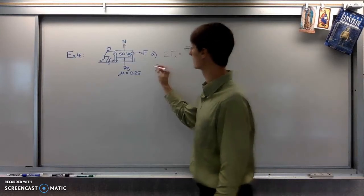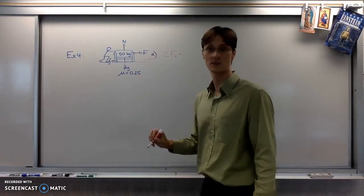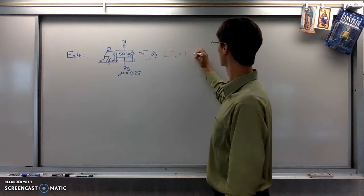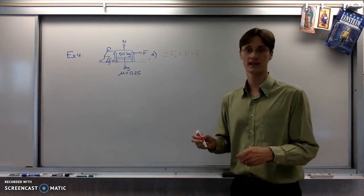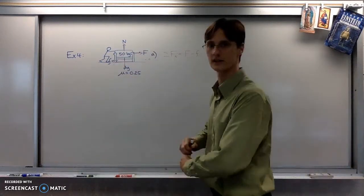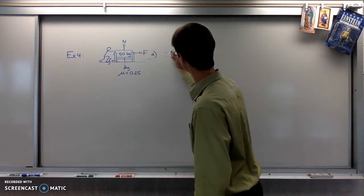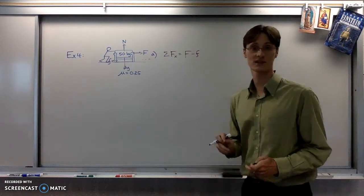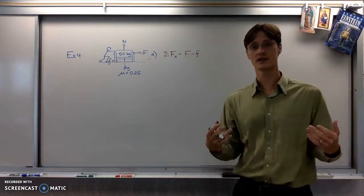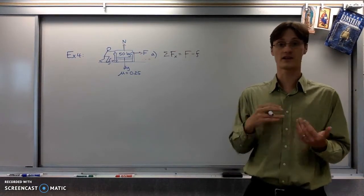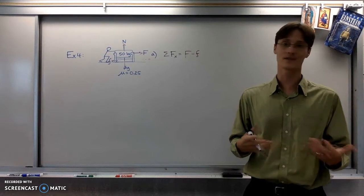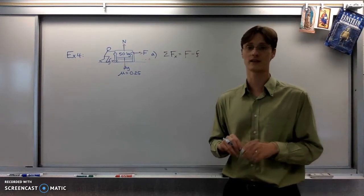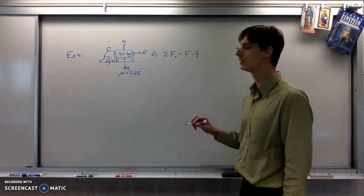So in the x direction, which can just be the regular xy axis, we would have the applied force and the friction force like that. Applied force and friction force would be in opposite directions and therefore have opposite signs. You're going to see any two forces that occur in the same direction having the same sign.